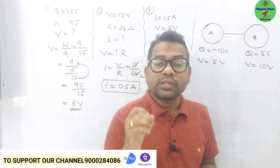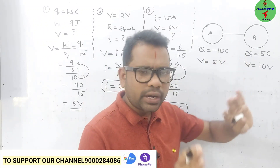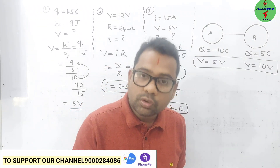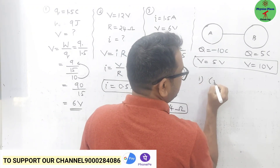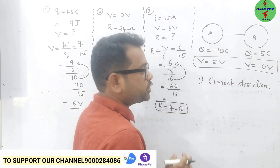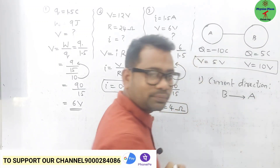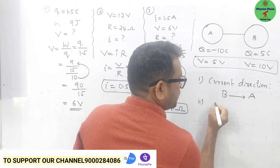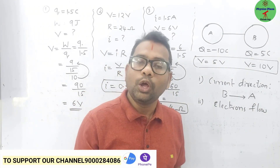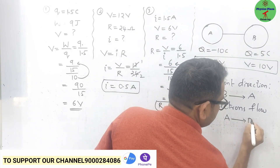First, find the current direction. Current always flows from high potential to low potential — forget about the charge, potential difference is important. B is at 10 volt and A is at 5 volt, so B is at higher potential. Therefore current flows from B to A. Second, electrons flow opposite to the direction of current, i.e., from low potential to high potential. So electrons flow from A to B.